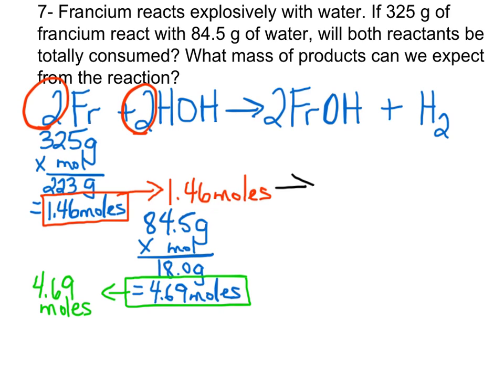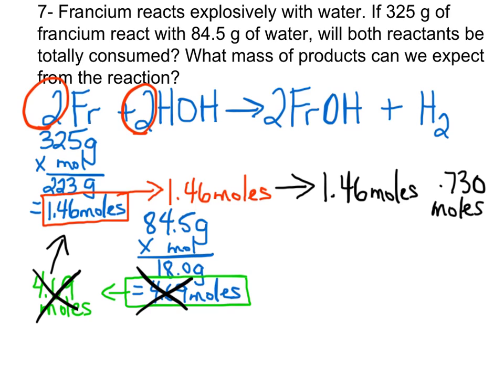We always choose the line with the least numbers in them, the lowest amounts, because that is the line that contains the amount of moles that we actually have available to react in the equation. This reaction here can't happen because we don't have 4.69 moles—we don't have enough of it.